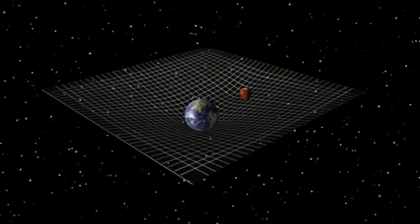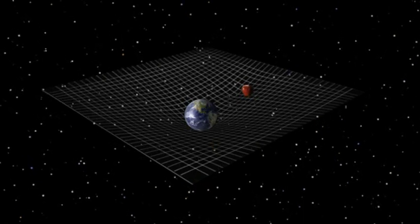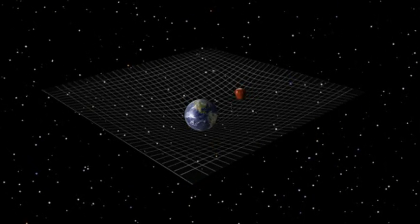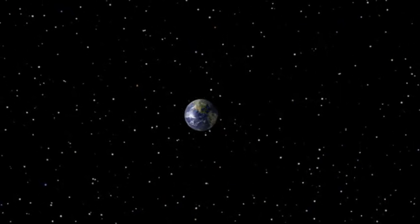And the apple simply follows the most natural path available to it as it moves through this curved space. In this case, a path that causes it to move towards the Earth.